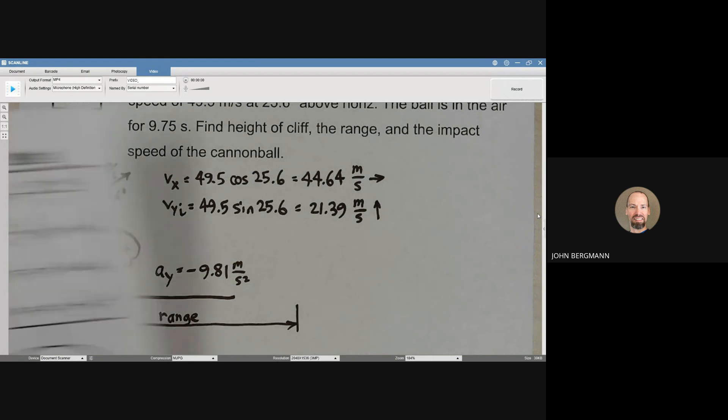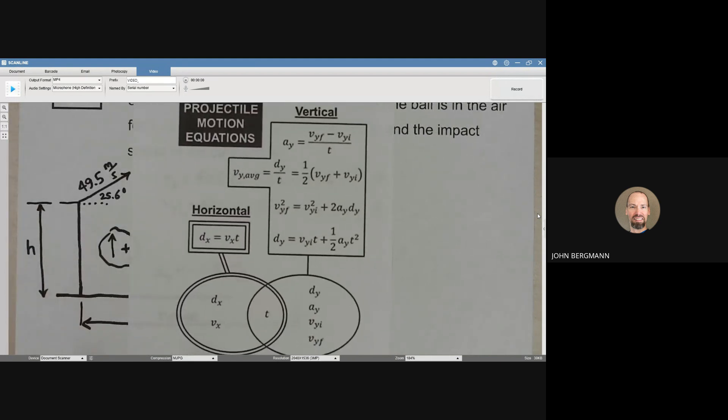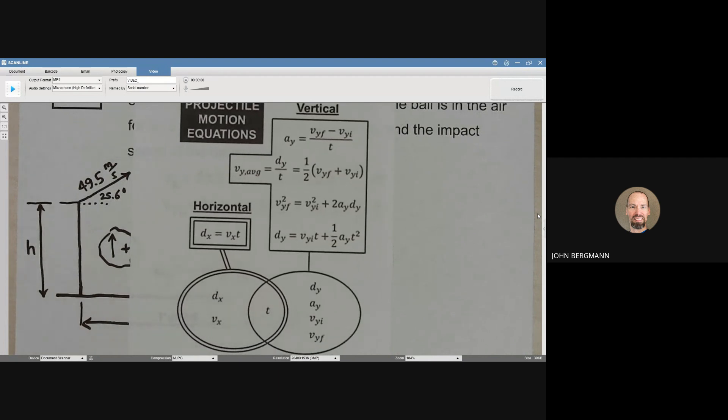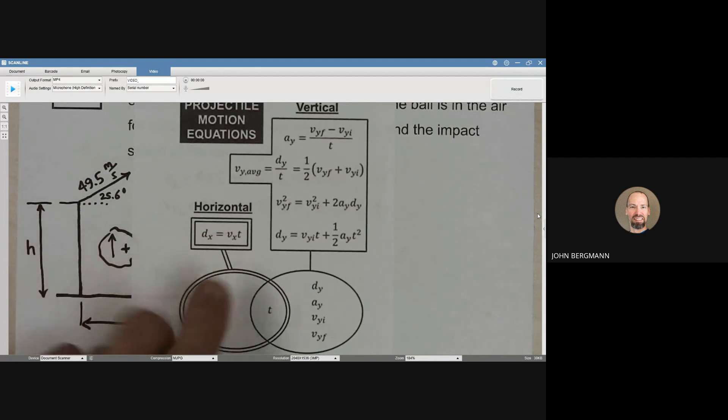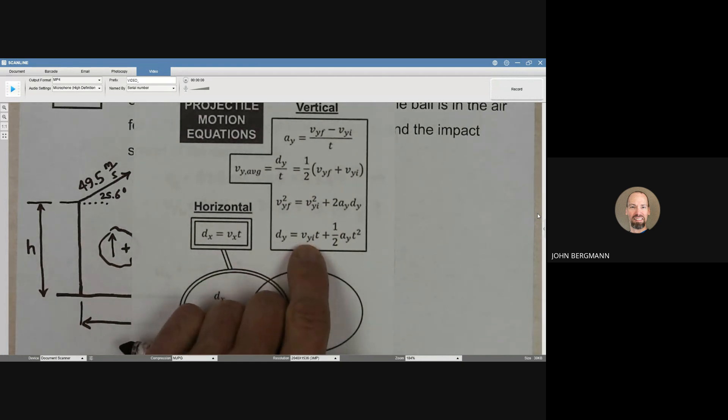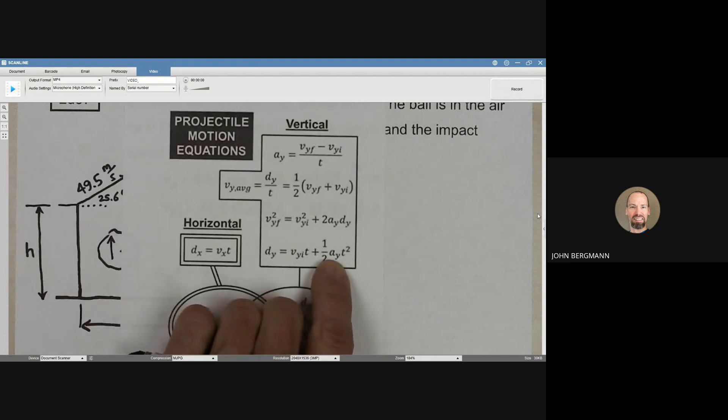What variable over here is most closely related to the height of the cliff? Well, certainly it's nothing over here because this is all horizontal motion. And over here, the thing that's closest to the height of the cliff is dy. So we know vy initial, we know the time it's in the air. We're told that it's in the air for 9.75 seconds. We know the acceleration.